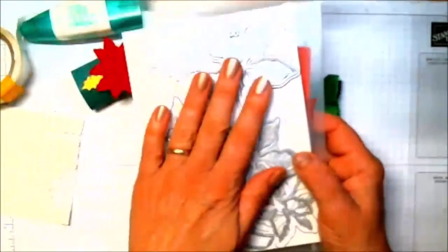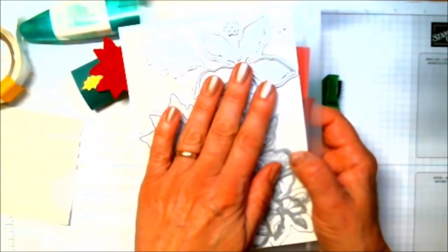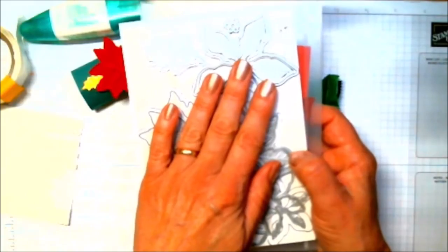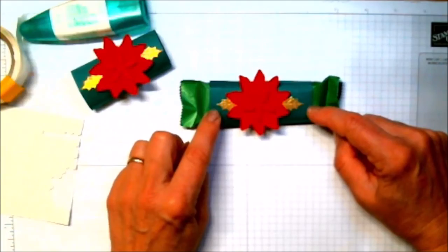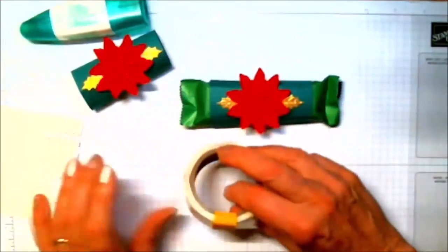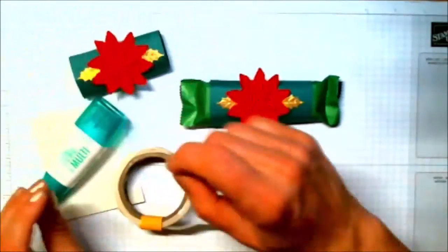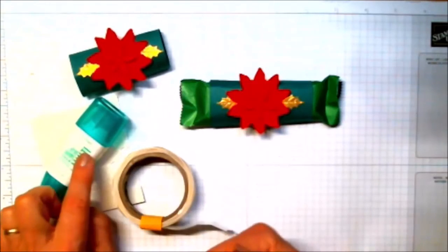Either you have to have the poinsettia dies, or we have to find a way for you to borrow my poinsettia dies. Any green paper that you have, you will find glue dots and dimensionals, and the liquid glue, extremely useful.